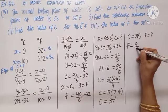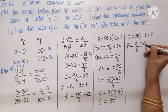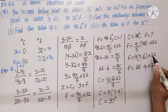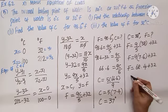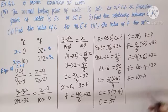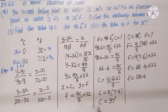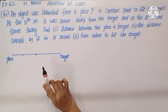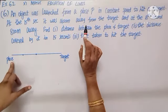F equals 9 times 7.6 plus 32, so F equals 68.4 plus 32, that is 100.4 degrees Fahrenheit. We have found the relationship between C and F, and solved for C when F is given and for F when C is given. Question number six: an object was launched from a place P at constant speed to hit a target T.